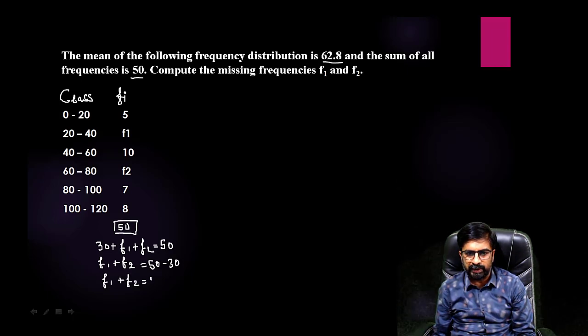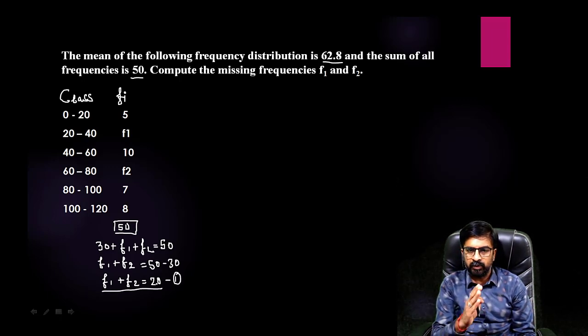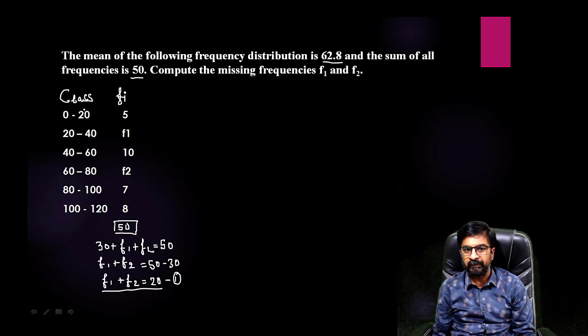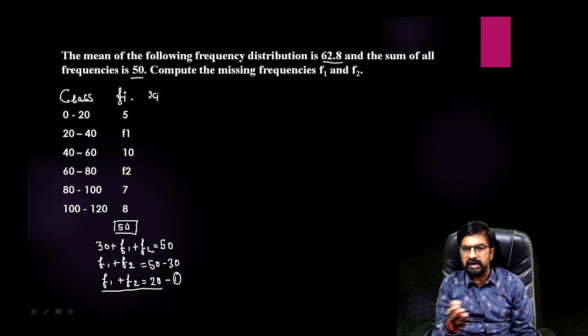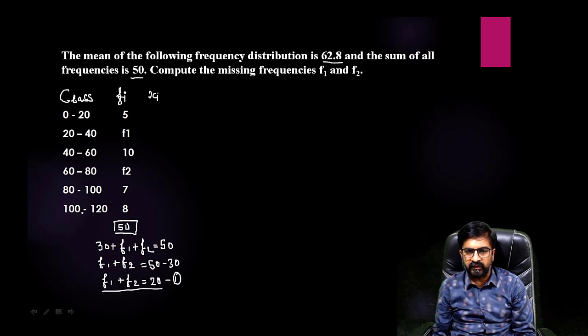So f1 plus f2 will be equals to 50 minus 30. F1 plus f2 will be equals to 20. Take it as result number 1, this will be your equation number 1. Second equation you will get from the solution. Here you need to find out xi, means class mark or also you can say this as midpoint of class.